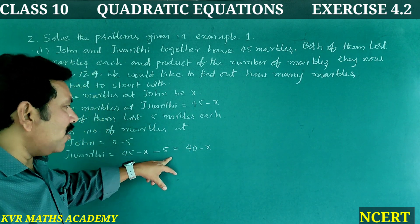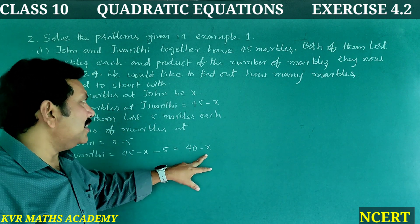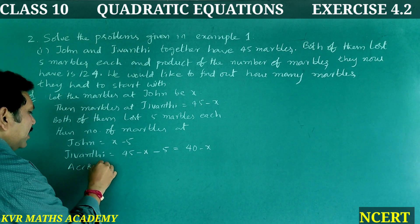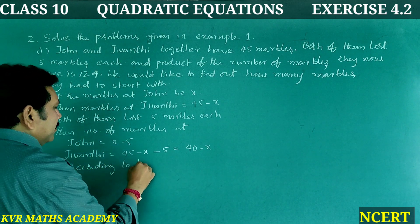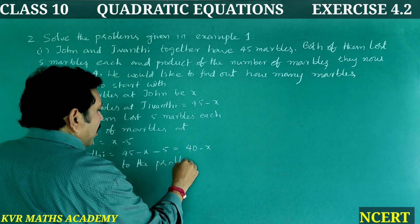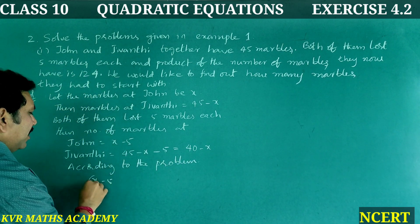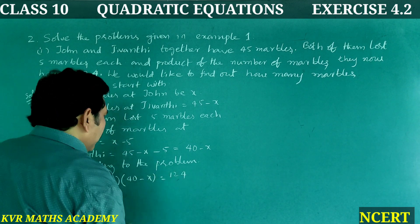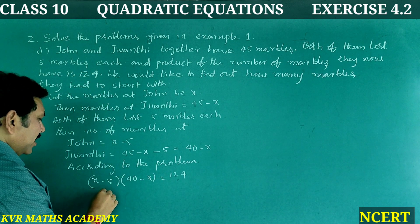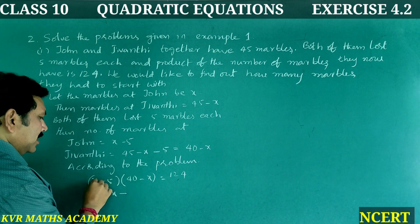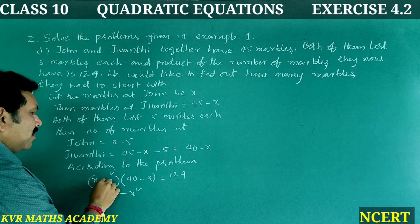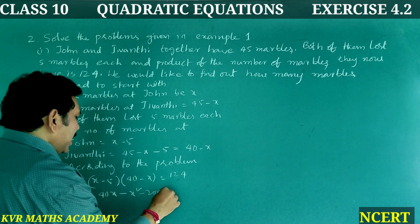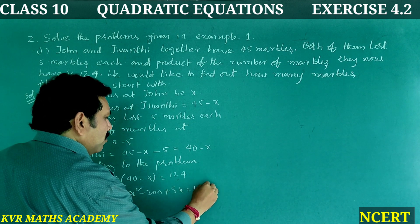According to the problem, (x minus 5) into (40 minus x) is equal to 124. Multiplying: 40x minus x squared minus 200 plus 5x equals 124.